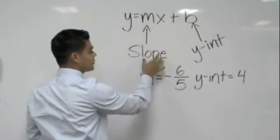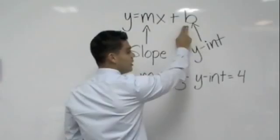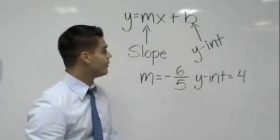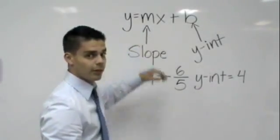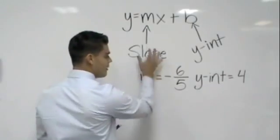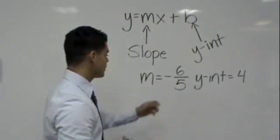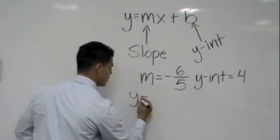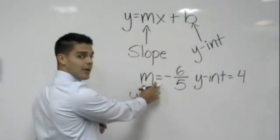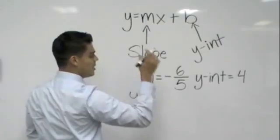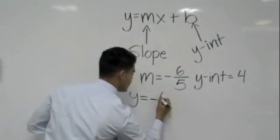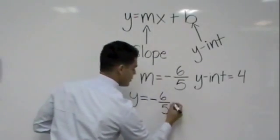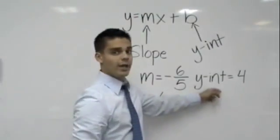So our m is always going to stand for slope, and our b always stands for the y-intercept. Therefore, when I write the equation of a graph in slope-intercept form, all I do is plug in my values. So remember, I said slope stands for m. Therefore, I'm going to rewrite my equation. y is y, and instead of an m, now I actually write the slope. I take that m out and I put where my slope is, which is negative 6 over 5. I leave my x and I plug in my y-intercept.